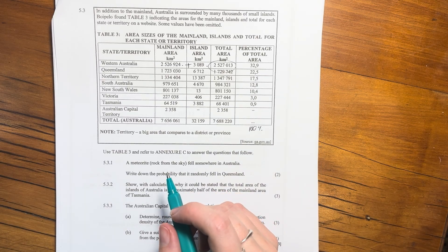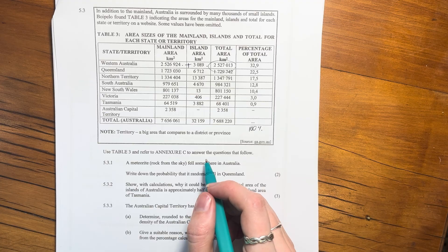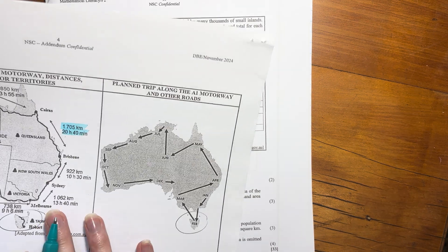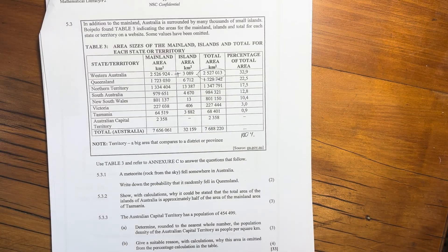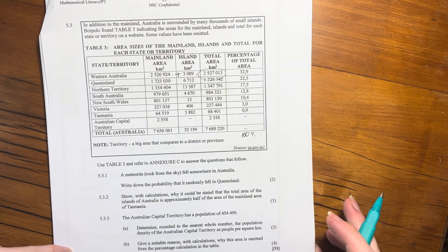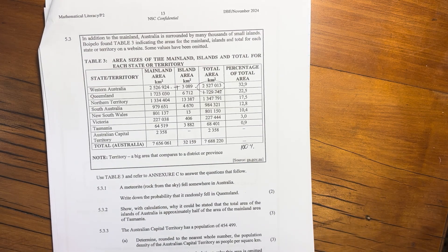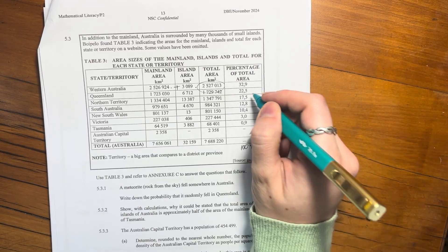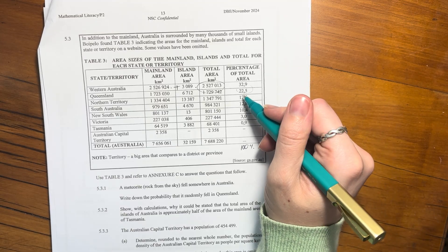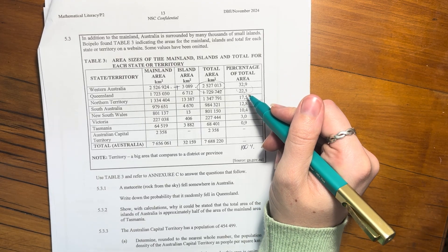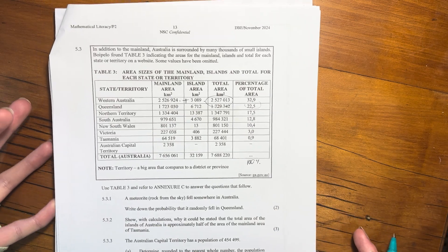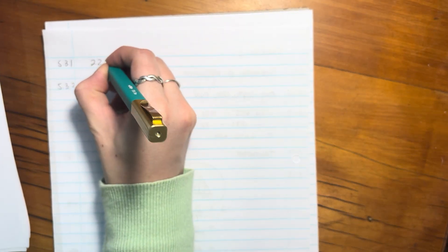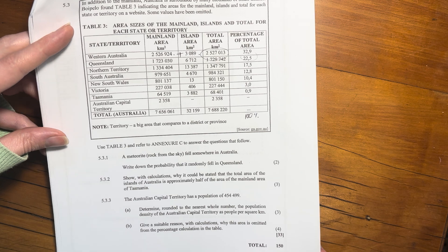So let's not spend too much time on that because remember, the questions help us understand the information better. Use Table 3 and refer to Annex C to answer the questions that follow. A meteorite fell somewhere in Australia. Write down the probability that it randomly fell in Queensland. Because these all add up to 100%, this is basically a probability. So it is a 22.5% probability of landing in Queensland because Queensland is 22.5% of the land. So it's not a trick question. That's why it's only two marks. You literally just read it off and you are done.